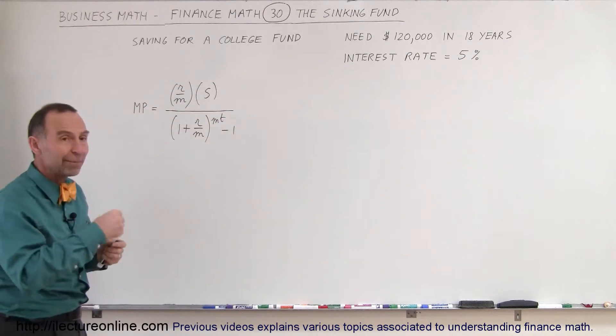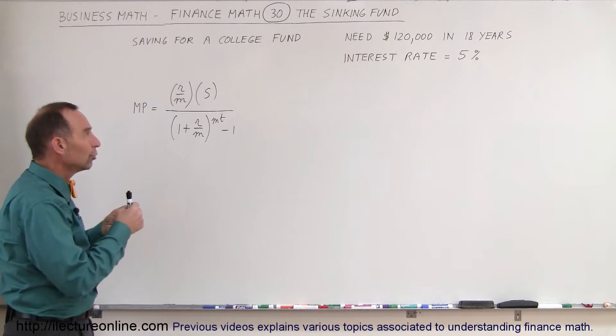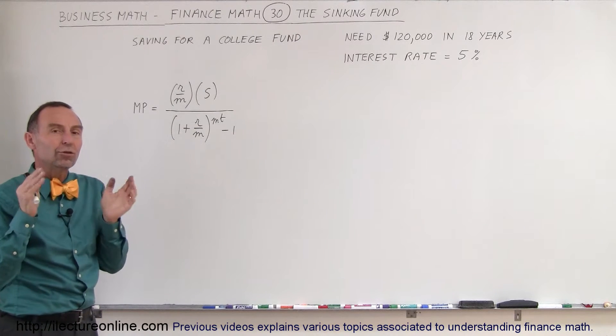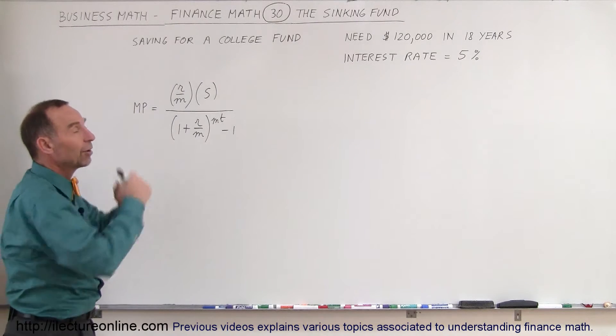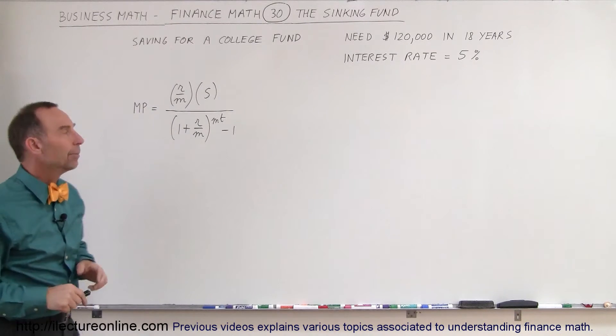So what you're going to do is you're going to start making monthly payments and you're going to do that for the next 18 years. You just need to make sure that those monthly payments are large enough so that in 18 years you'll have $120,000 in the bank.